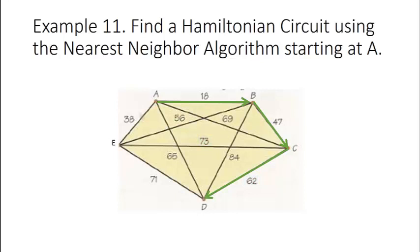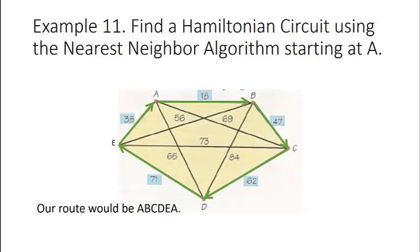Now D has no choice. You may be tempted to travel to vertex A which is 65 miles away, but we're not allowed to do that because we can't return home until every vertex has been visited. So we must travel to our remaining vertex E and then return home to A. The route found is A, B, C, D, E, A and the total cost or distance is 236.